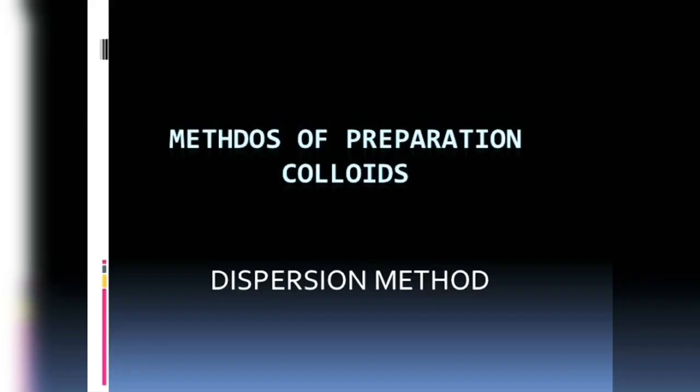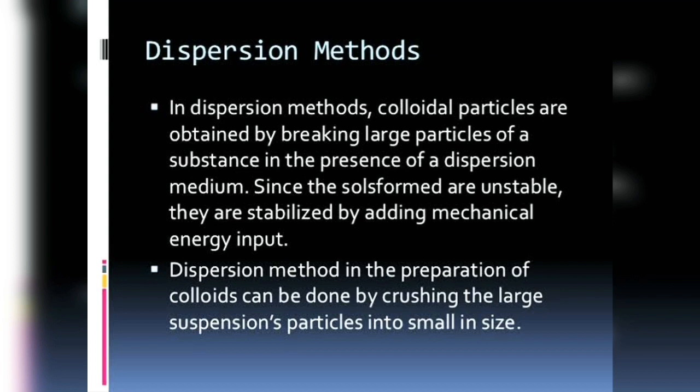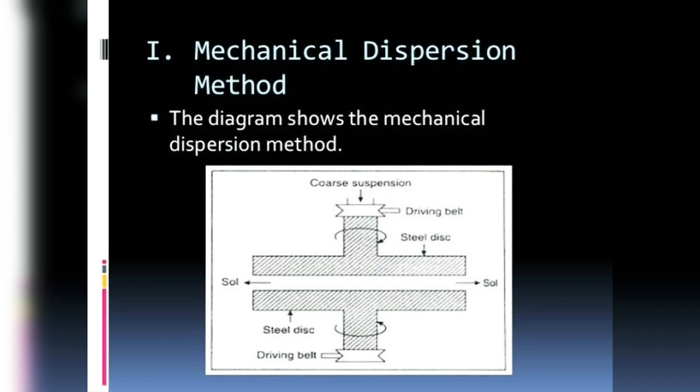Preparation of colloidal solutions by mechanical dispersion method: colloidal mills contain metal plates which revolve at around 7000 RPM in opposite directions. When bigger size particles are made to pass through these metal plates, they are ground into colloidal size particles. This is how colloidal graphite ink is produced.